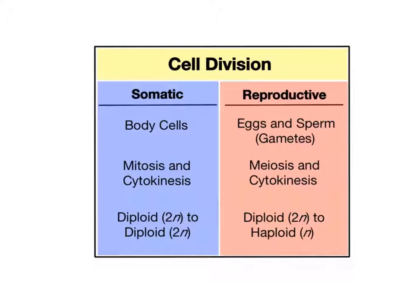Somatic cell division refers to the division of the non-reproductive body cells, like skin cells, bone cells, muscle cells, etc. The prefix soma refers to the body. This type of cell division is carried out through the process of mitosis and occurs when tissues grow or are in need of repair or maintenance.